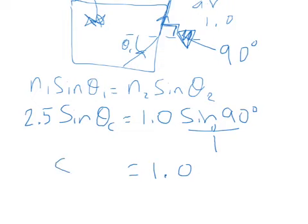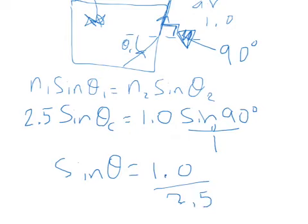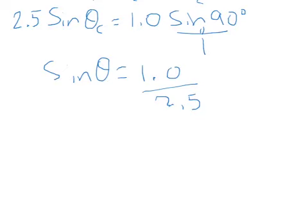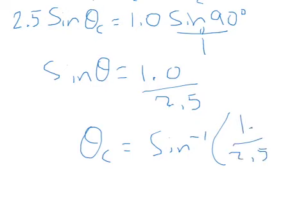That means our critical angle is found from this. I just heard the bell—my lunchtime's just about over, so I'm going to rip through this really fast. We take the inverse of both sides. I can hear my students knocking, but they've got another 5 minutes. So let's do this on the calculator, and we get 23.58 degrees.